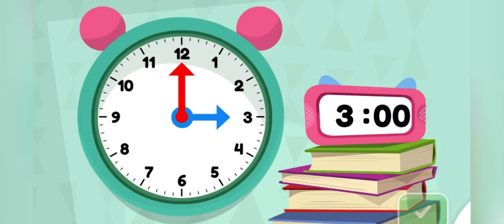Now you can play with the clock. Move the red minute hand to each number on the clock. Count by fives, and you can see how the time changes.